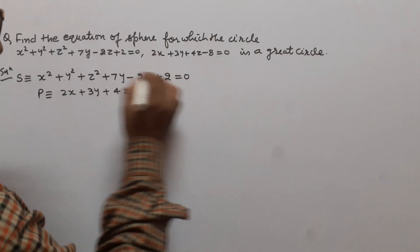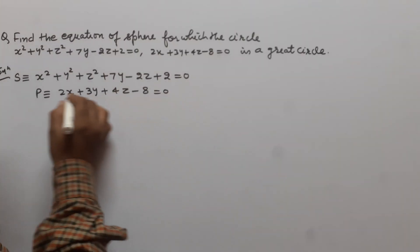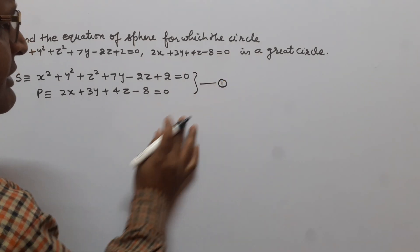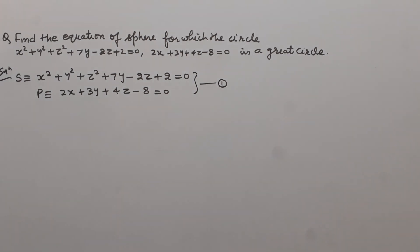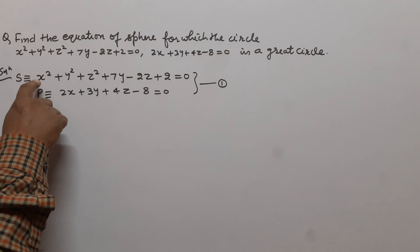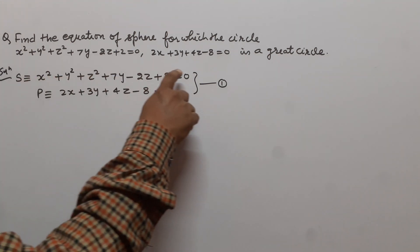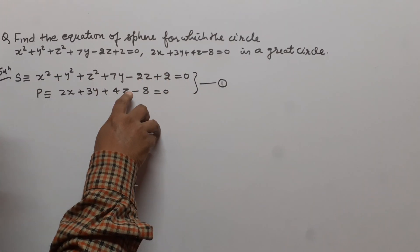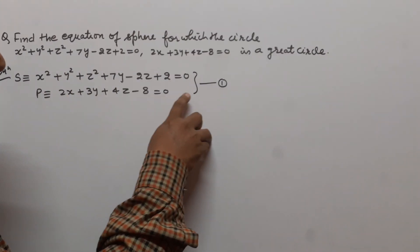We know that this is the equation of the sphere and this is the equation of the plane. These equations individually represent the sphere and the plane, but the section of the sphere by the plane gives the circle. Together they represent the equation of the given circle 1.